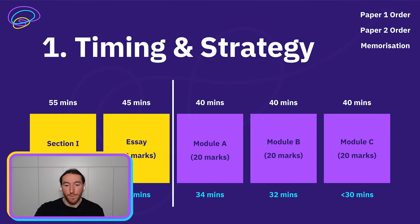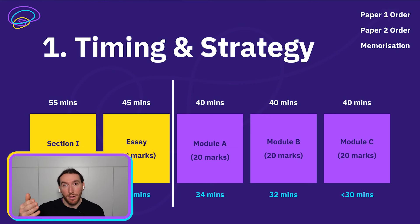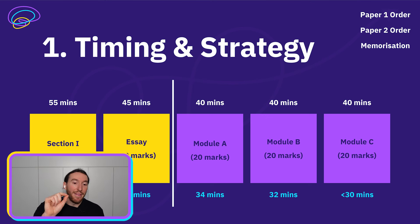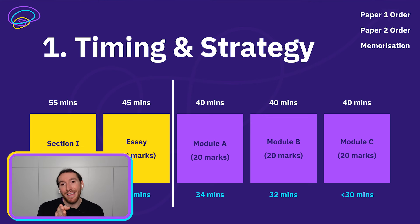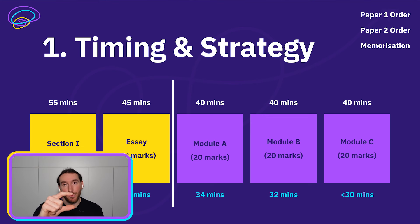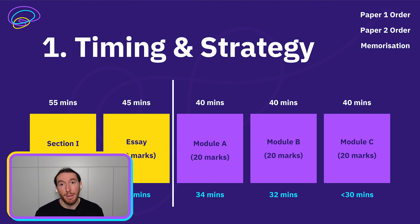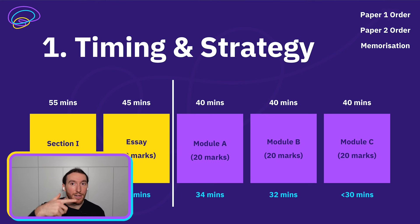You actually get 40 minutes for Module A and B. We want to make sure Module C is a bit shorter in case Module A or B runs over, but you need to be disciplined and prepare by timing all your draft essays and cutting them down. With the common module essay, we're going to pretend that's 40 minutes, so we have a buffer for section one — which really gives you one hour for section one, because you get the 10 minutes reading time, which should be spent reading the questions including the marks first, and then looking at the text very deliberately with the marks and question in mind.